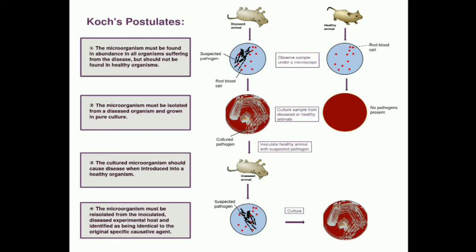Here we have four postulates. First postulate: the microorganism must be found in abundance in all organisms suffering from the disease but should not be found in healthy organisms. Second postulate: the microorganism must be isolated from a diseased organism and grown in a pure culture.